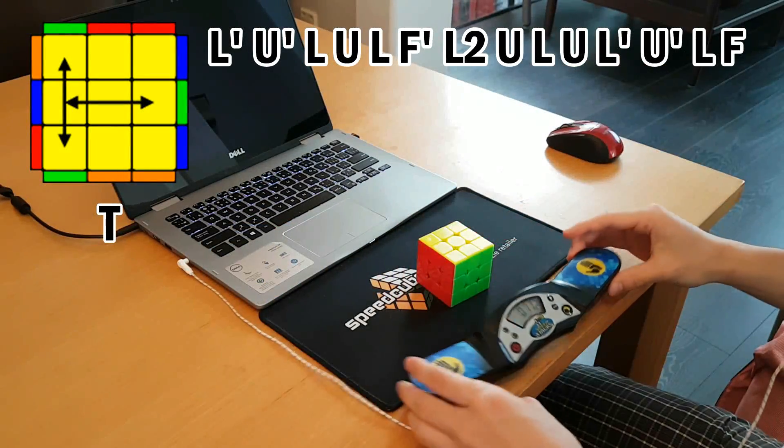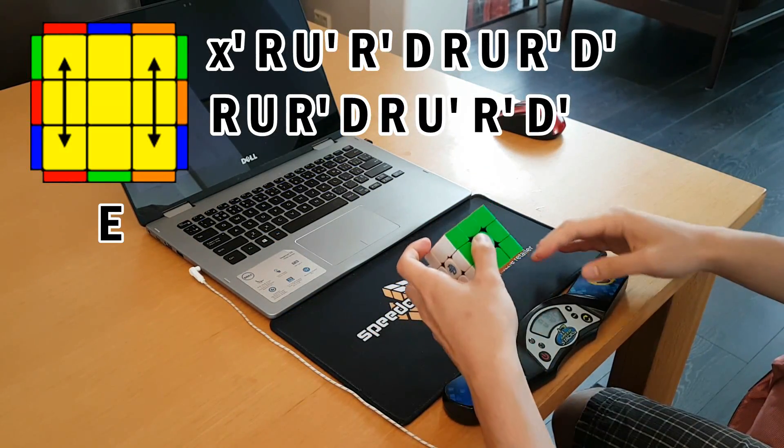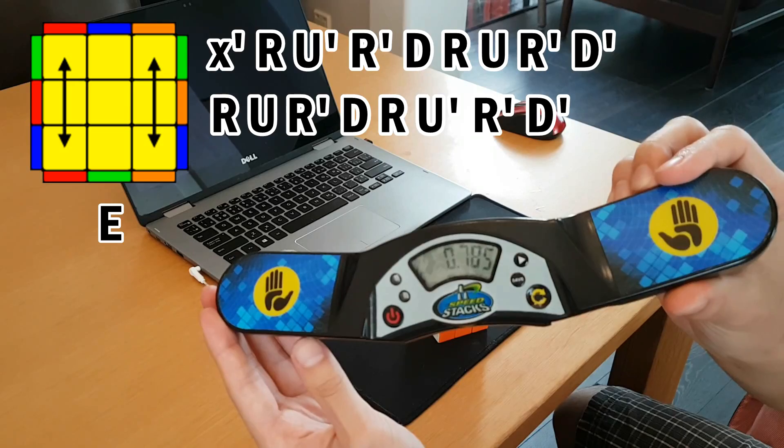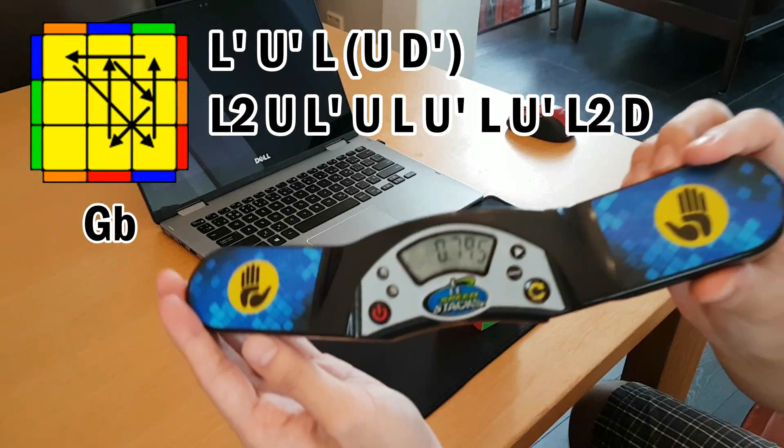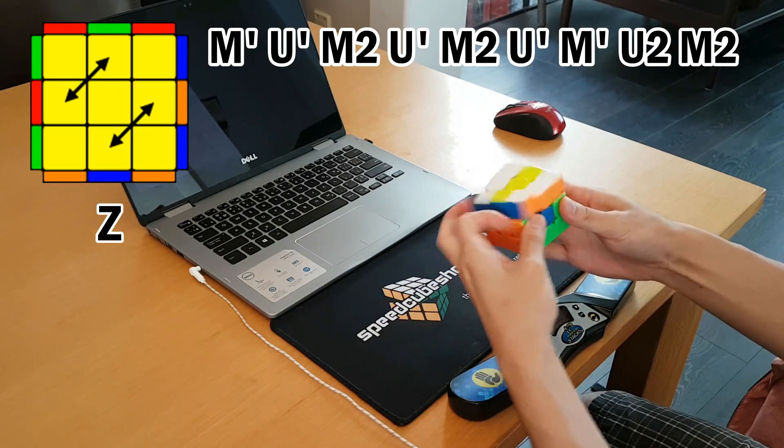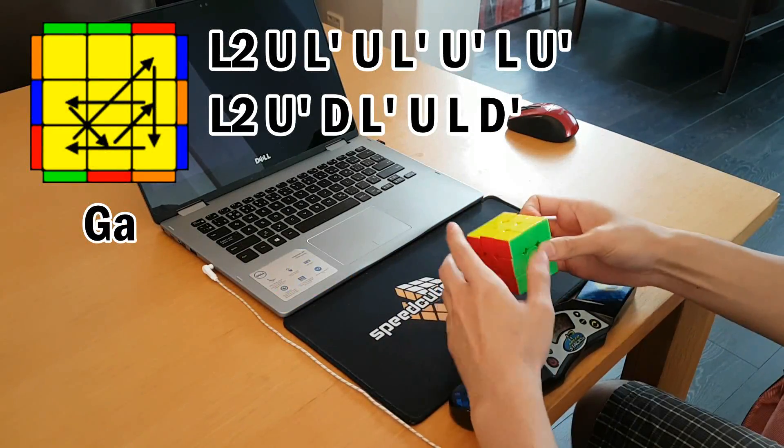Okay, so the world record at the time was about 5 seconds, and the best I could do on this prepared solve was 7 seconds. 7 seconds, even though I knew everything that was going to happen in the solve, which is already an unrealistic situation, so it was impossible for me to get a world record time, even if everything happened perfectly.